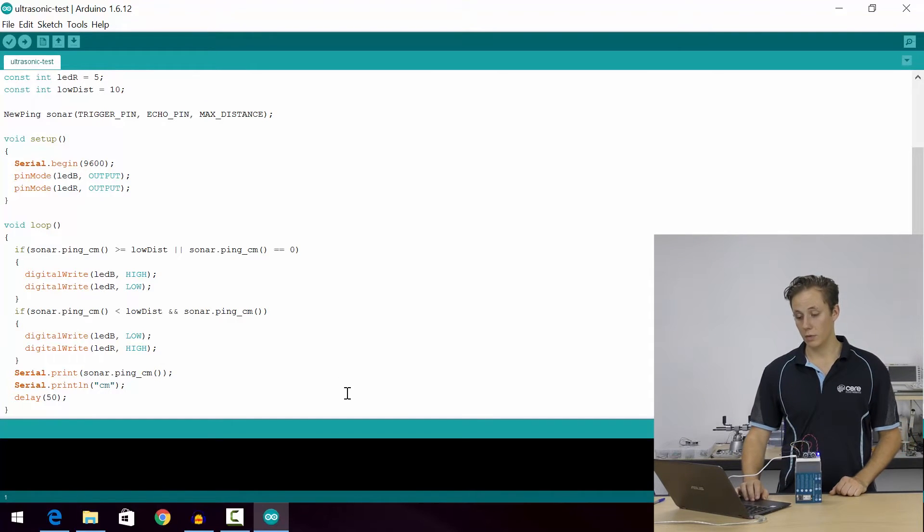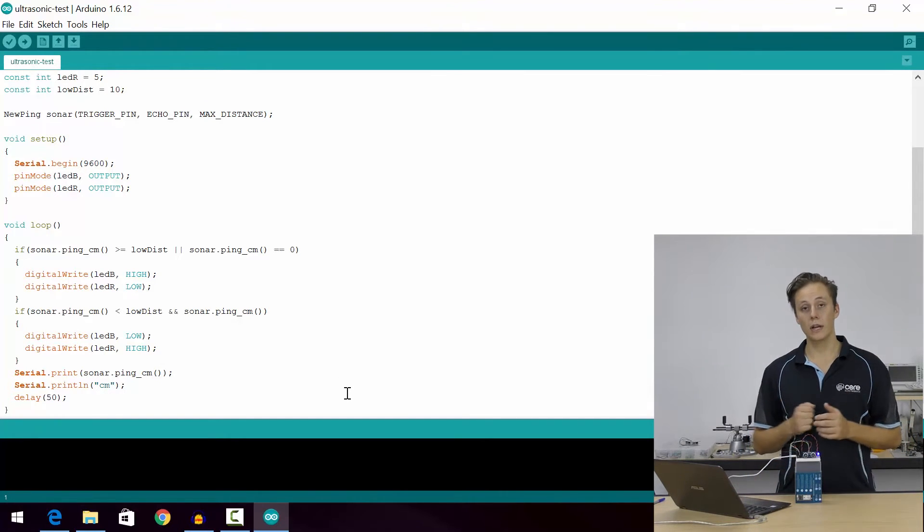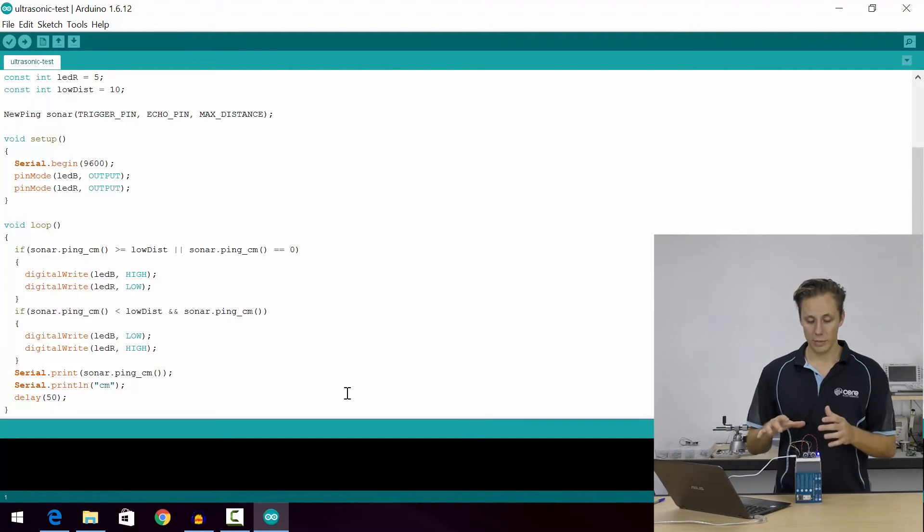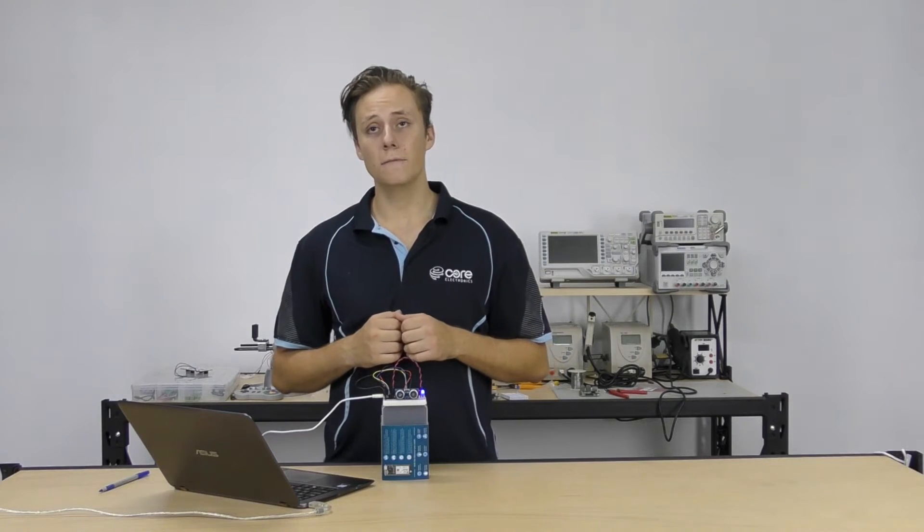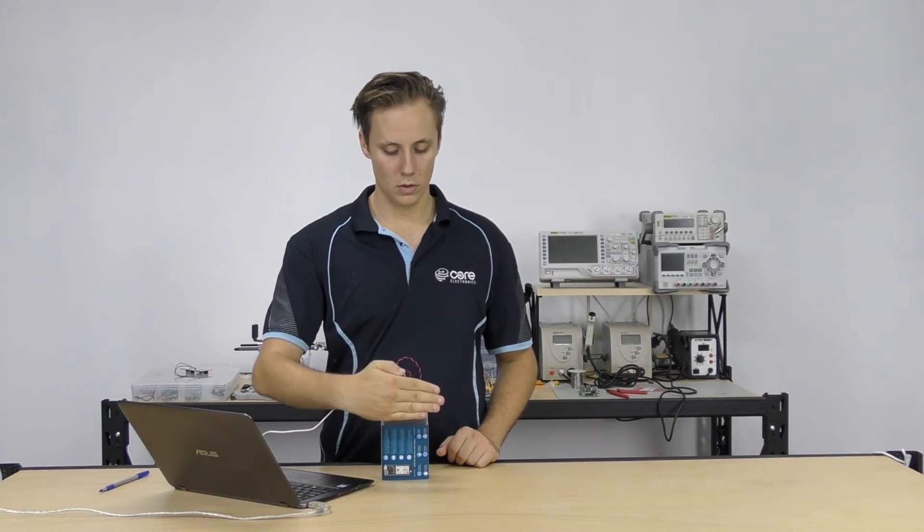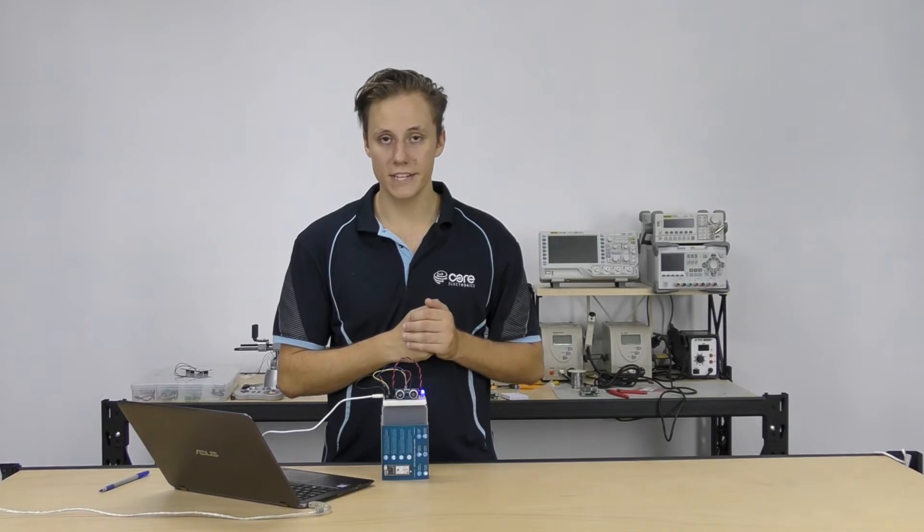The code here is really simple. We compare the sonar.ping_cm - that's getting the ping result in centimeters - we compare that to a preset distance, in this case the low_dist variable. And if it is shorter than that, so if it's within 10 centimeters, then we'll light up the red LED. And you can see that the red LED lights up nicely. Dead easy.